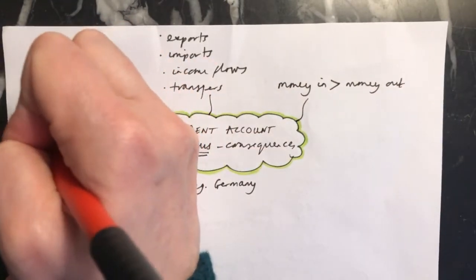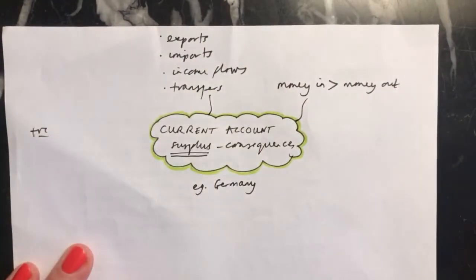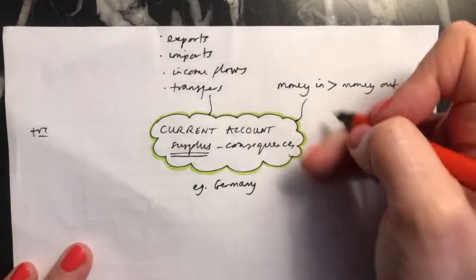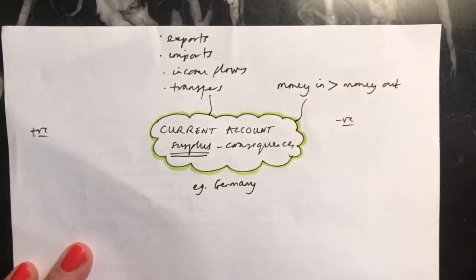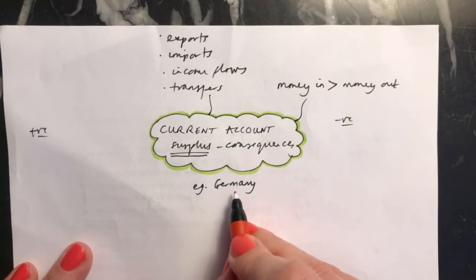There are a lot of positive things about having a current account surplus, but there are also some negatives. It's not all good. An example of an economy that has a current account surplus would be Germany. They tend to export a lot of manufactured materials, and that's part of the reason why they have this surplus on their current account.